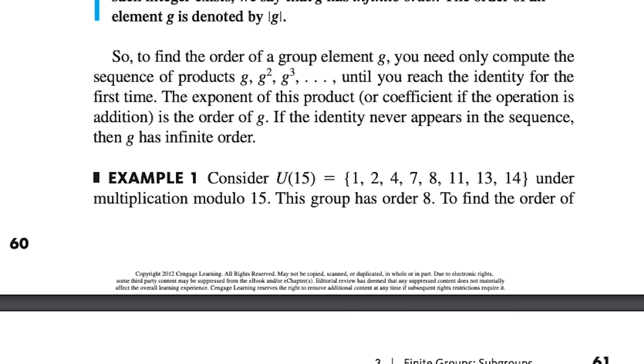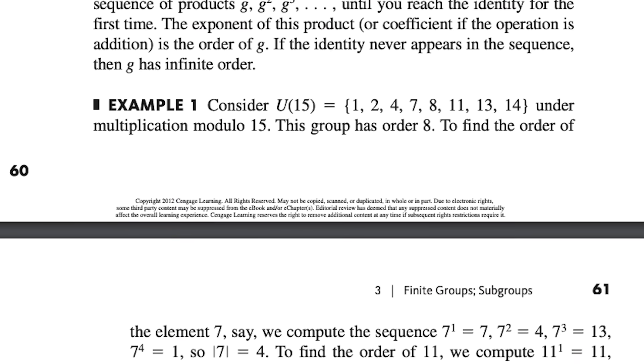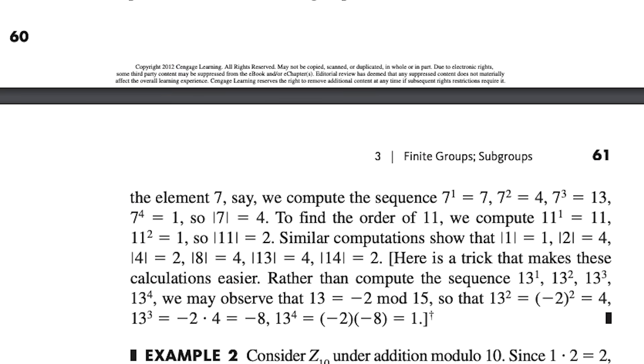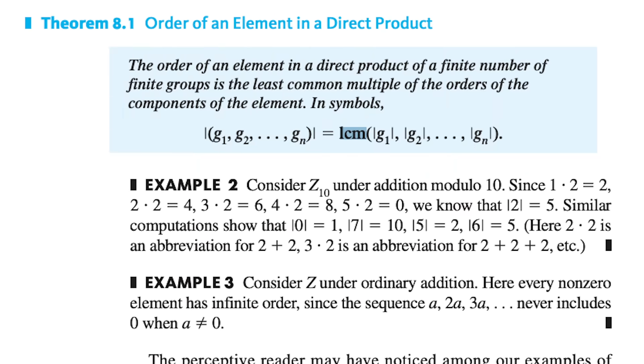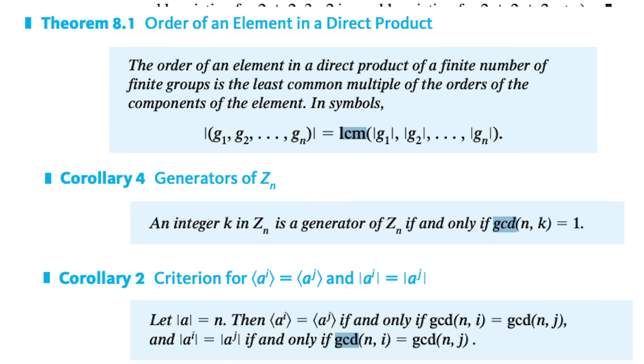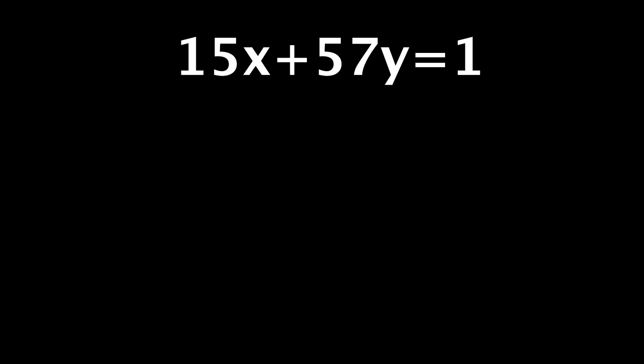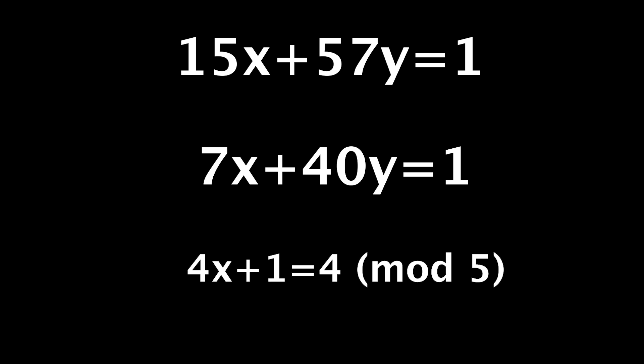I would highly recommend some number theory background, though. But you don't need too much. It's just that in abstract algebra, there's a lot of modular arithmetic, and a lot of solutions or theorems, mostly in the beginning of the book, involve the least common multiple or greatest common divisor of some stuff. So if you know, for example, why this has no integer solutions, and why this does in relation to the greatest common divisors, and also how to move things around in this modular arithmetic problem, you probably have enough background.